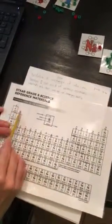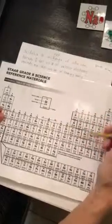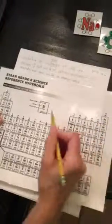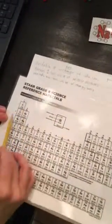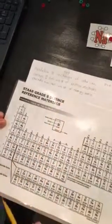Remember that groups are right here going across, which indicates the columns going down. So the group numbers are at the top going vertically, and periods are on the sides going left to right, telling us the number of energy levels.